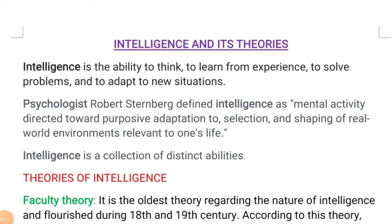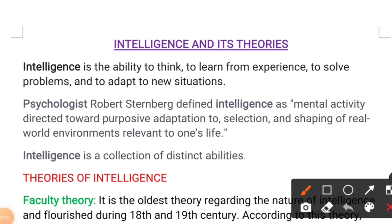Good morning and welcome back to the channel. In today's topic of discussion we have what is intelligence and we will discuss about the various theories of intelligence. It includes the faculty theory, the one-factor theory also known as unifactor, Spearman's two-factor theory, Thorndike's multiple-factor theory, and Thurston's theory — so almost five theories of intelligence in today's video.